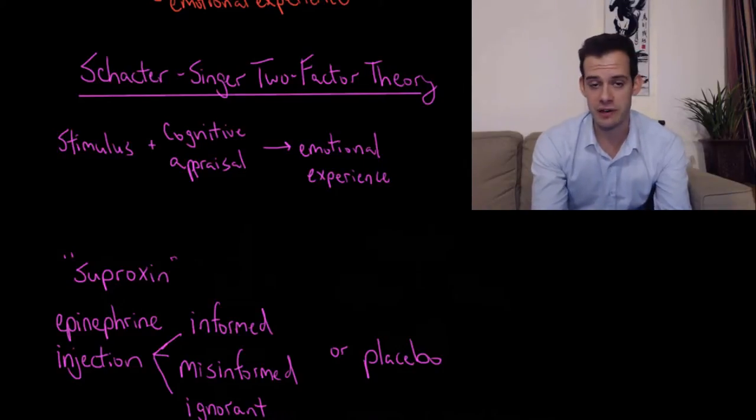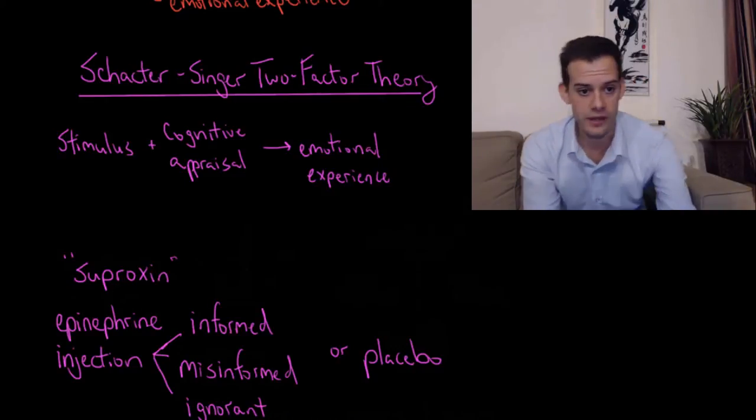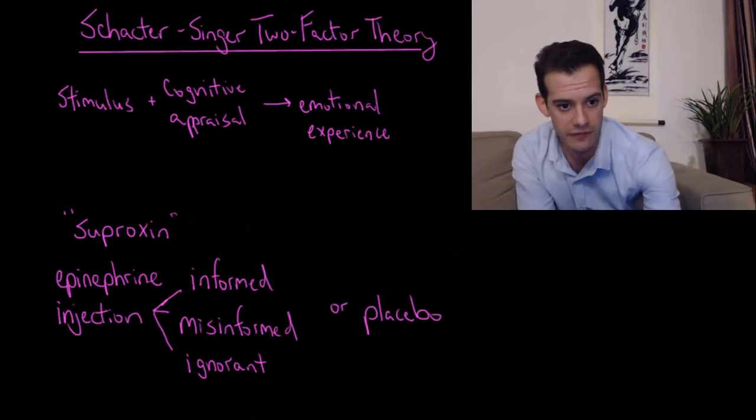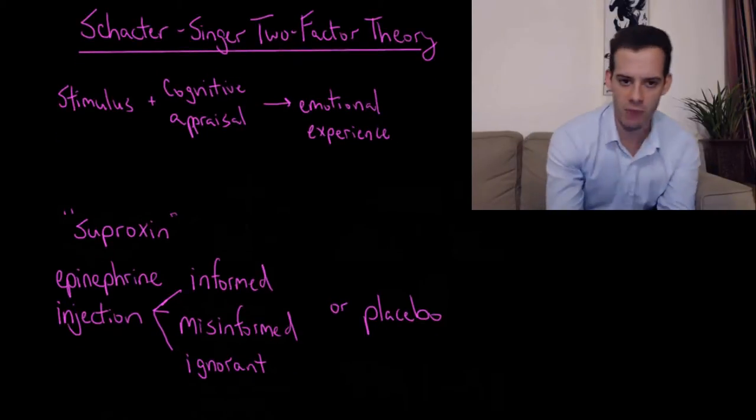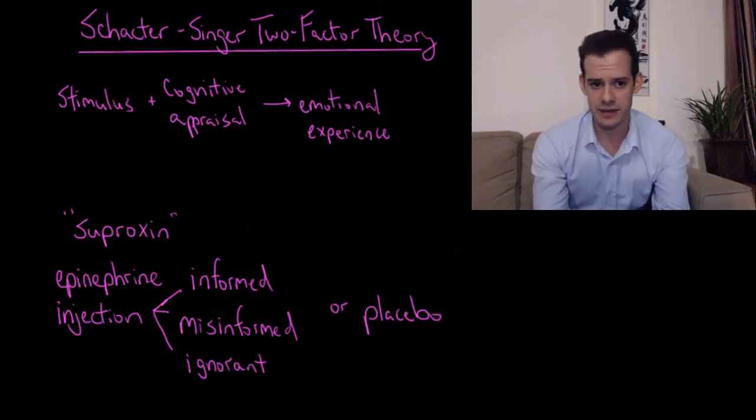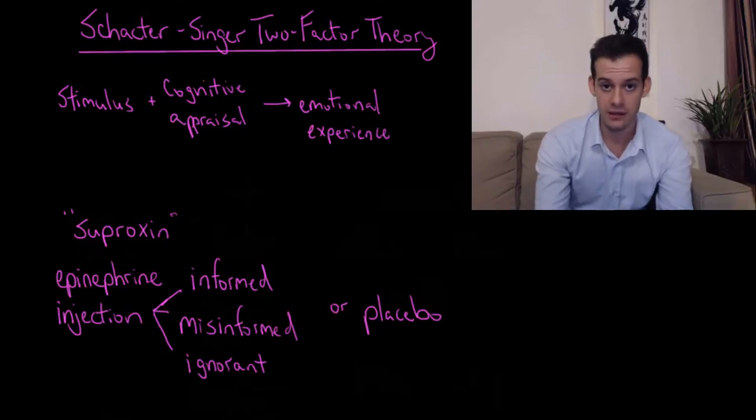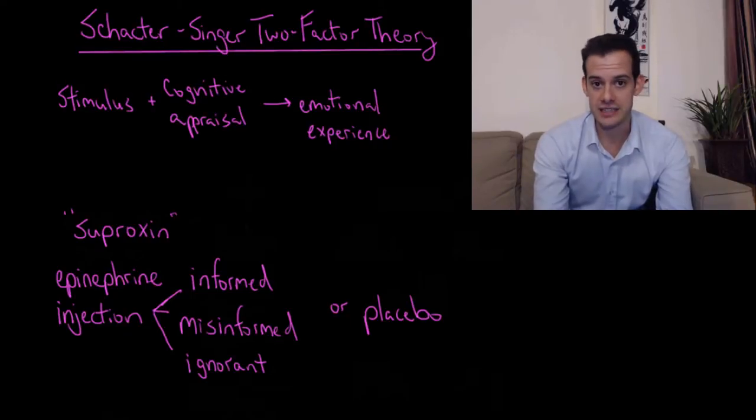To demonstrate this, we'll look at an experiment that was conducted by Stanley Schachter and Jerome Singer in 1962. This is a little bit complicated because there's a number of steps, but hopefully this will make sense. Participants came into the lab and they were told that they were going to get a vitamin injection related to eyesight. This was called Suproxin—it's a made up name. But what it actually was was epinephrine. You might remember that epinephrine is another name for adrenaline. This injection is of course going to cause some physiological changes in the bodies of the participants.